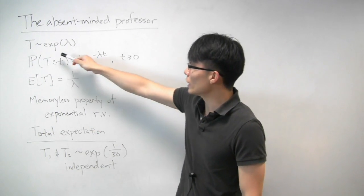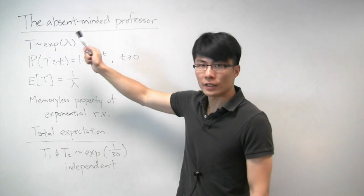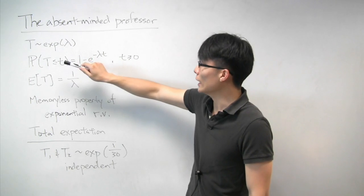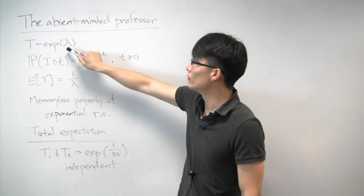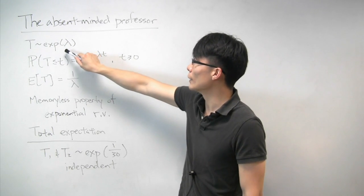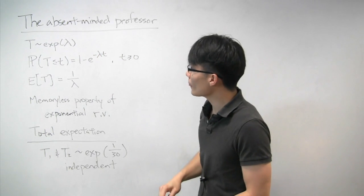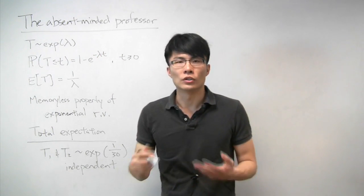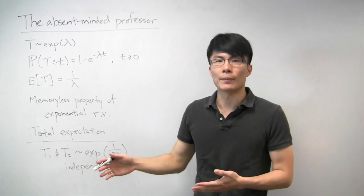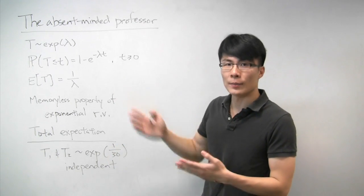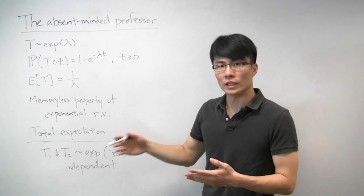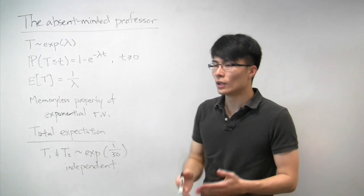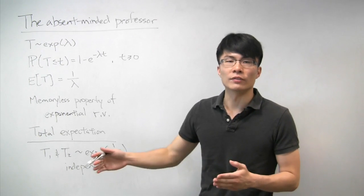An exponential random variable is a continuous random variable that takes on non-negative values, and it's parameterized by a rate parameter lambda. The exponential random variable is often used to model durations of time — the time until something happens. For example, in this case, the time until the student leaves, or the appointment is over. Sometimes you'll also use it as a model of time until something fails.